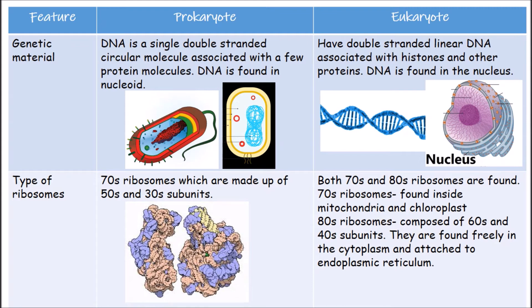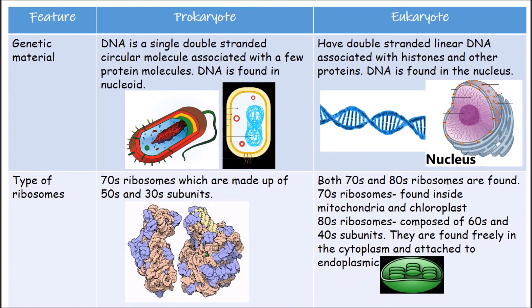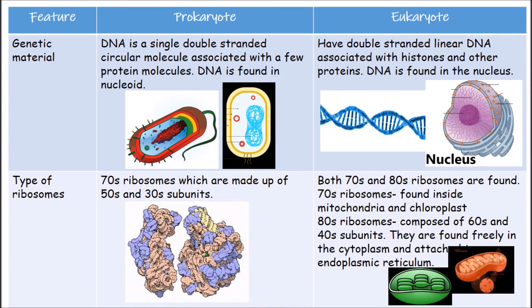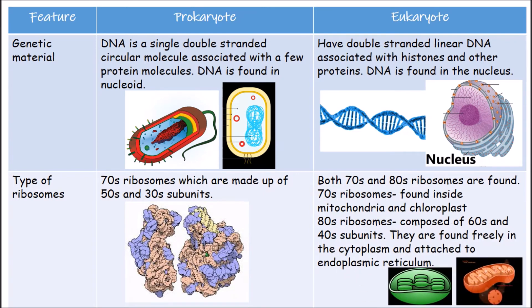In eukaryotes, 70S ribosomes are found inside mitochondria and chloroplasts. The 80S ribosomes are larger, composed of 60S and 40S subunits, and are found freely in the cytoplasm and may attach to the endoplasmic reticulum.